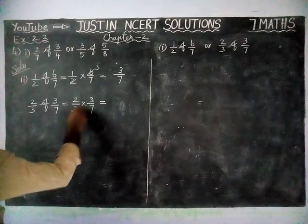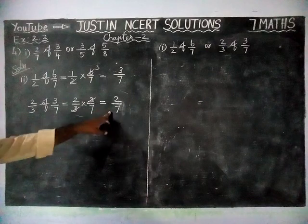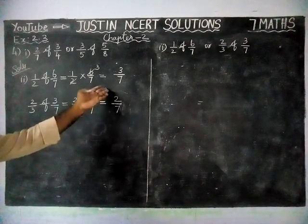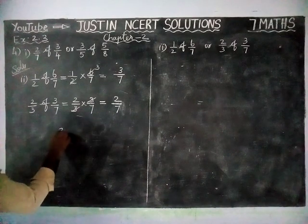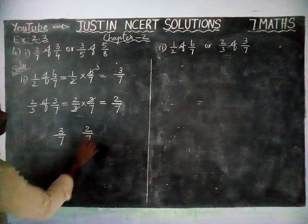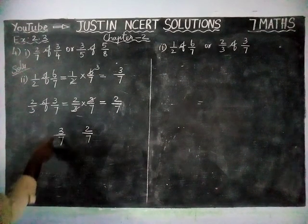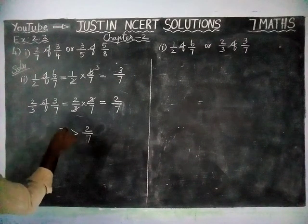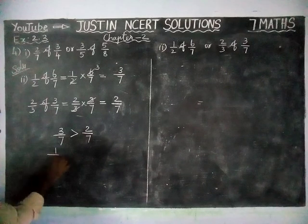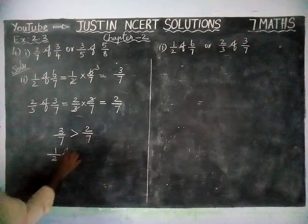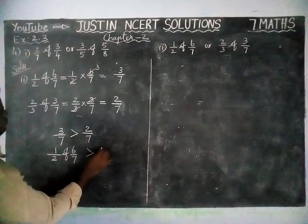Now, 2/3 into 3/7: here we have the common divisor 3, so 3 and 3 cancel, giving 2/7. Since both fractions already have denominator 7, there is no need to find the LCM. We can compare the numerators directly. 3/7 and 2/7: 3/7 is the greatest value. So 3/7 is greater than 2/7, meaning 1/2 of 6/7 is greater than 2/3 of 3/7.